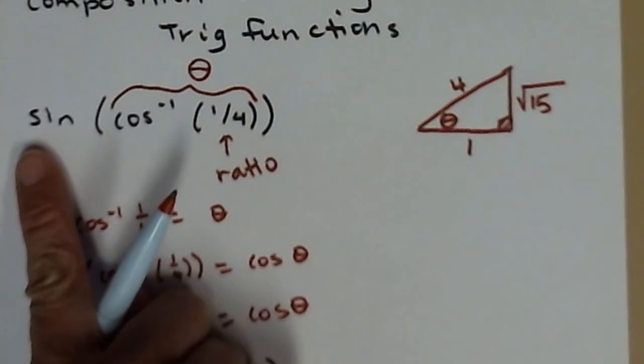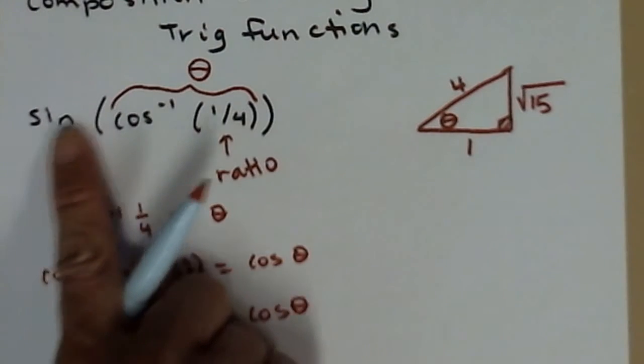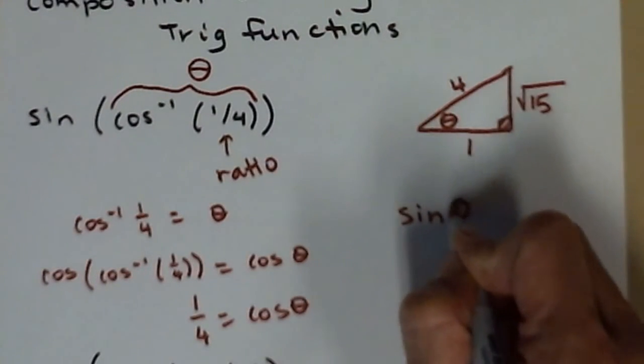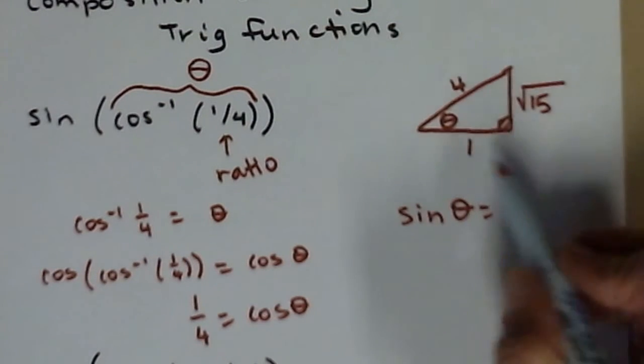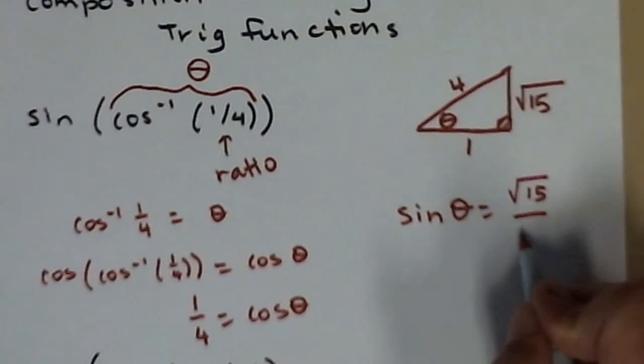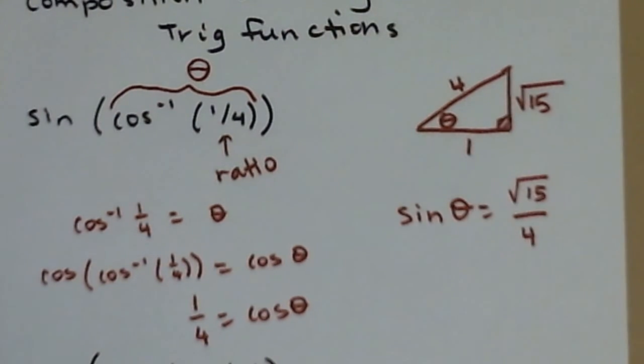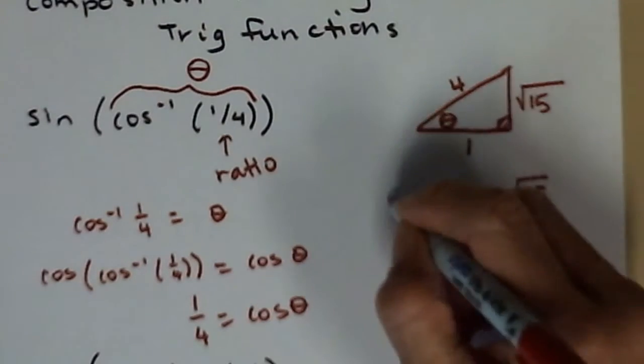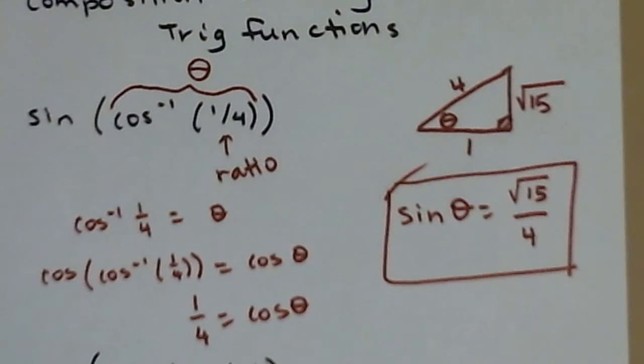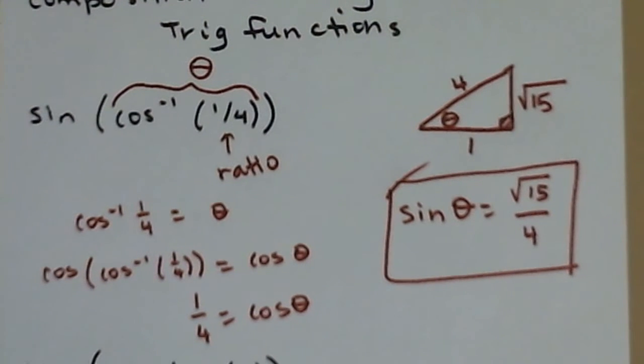Now I have all the sides of my triangle labeled. Come back and look at what we're trying to find, the sine of theta. The sine of theta, according to my triangle, is root 15, opposite over hypotenuse. And that's how we do composition of inverse and regular trig functions.